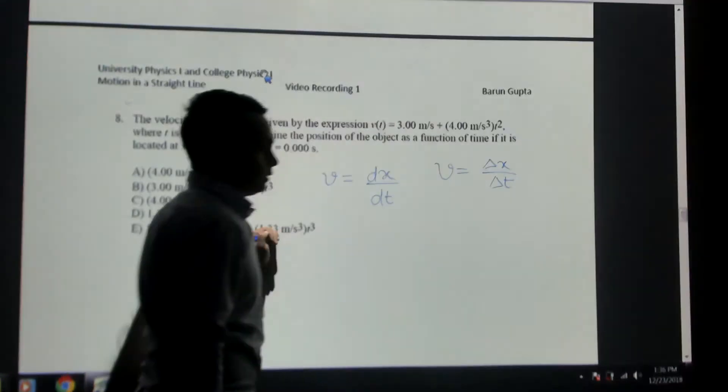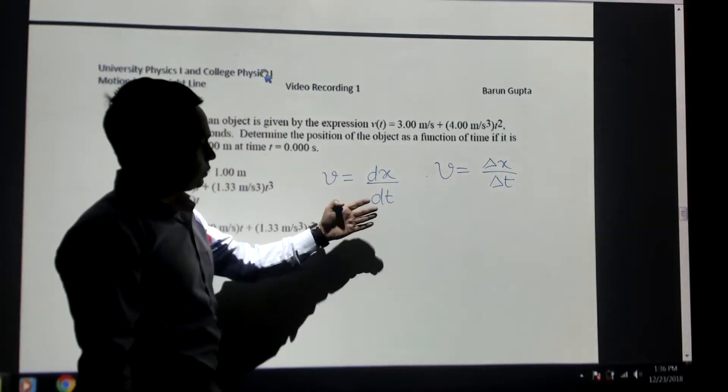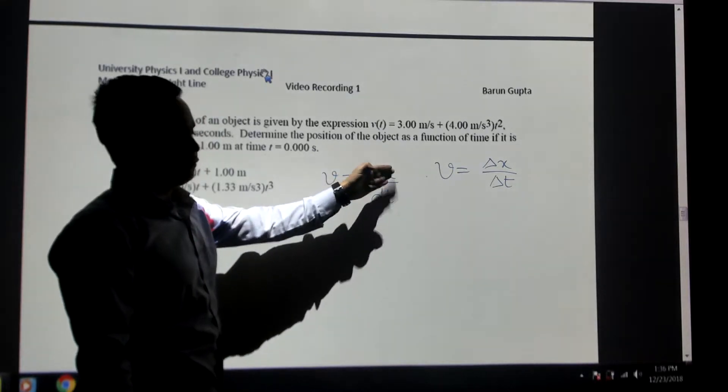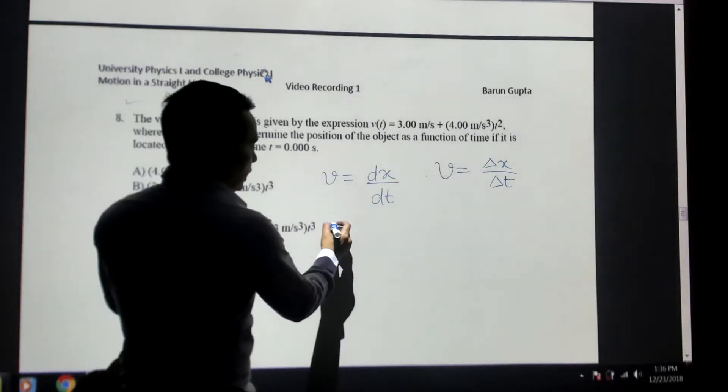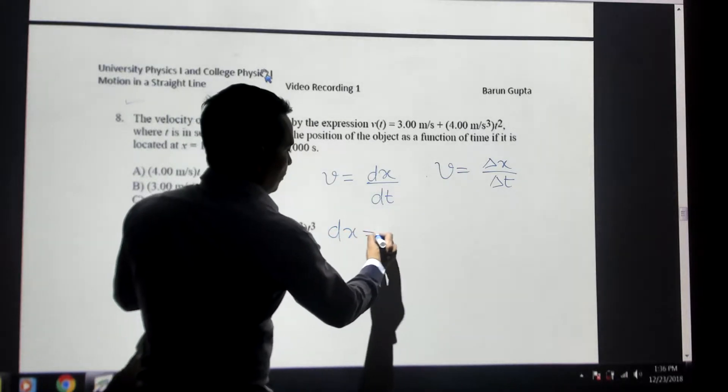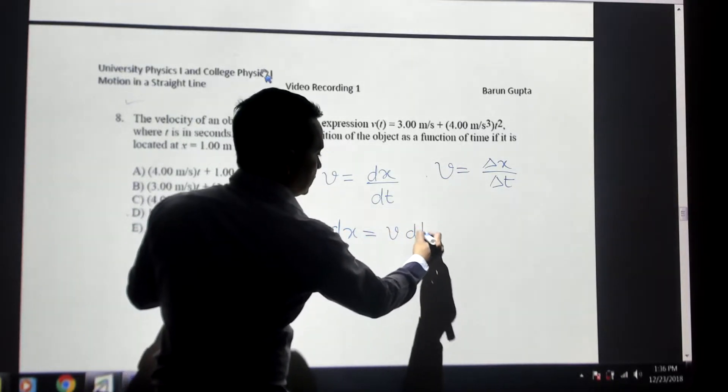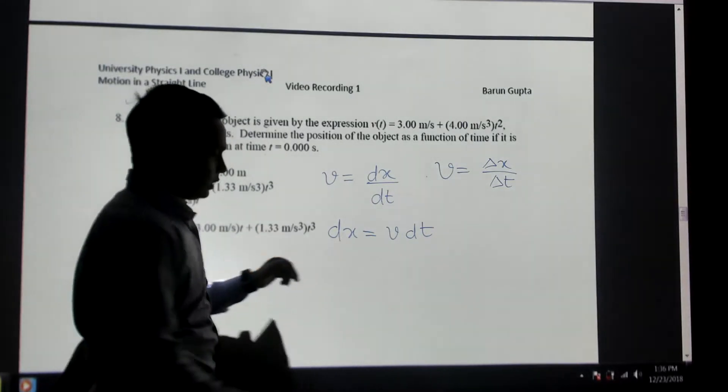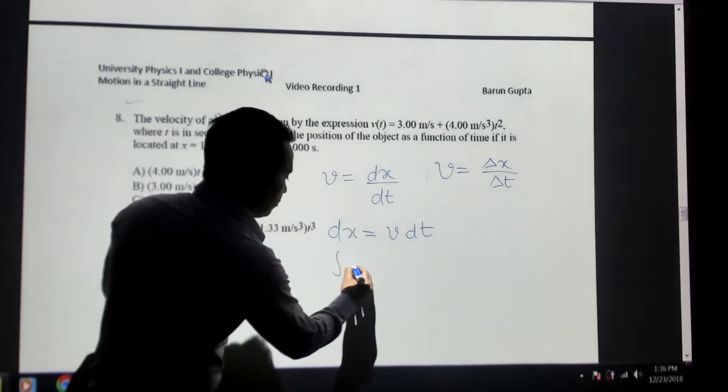Here I'm just going to use this equation. The velocity is given and I need to find out the position. The way I do it is dx = v times dt. I need to find the position, so I need to integrate both sides.